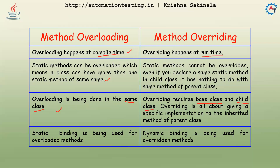Overriding is all about giving a specific implementation to the inherited method of the parent class. You have two classes, parent and child, and both classes have the same method, but both methods will have their own different implementation — that's why we use the overriding concept. Static binding is used for overloaded methods and dynamic binding is used for overriding methods.